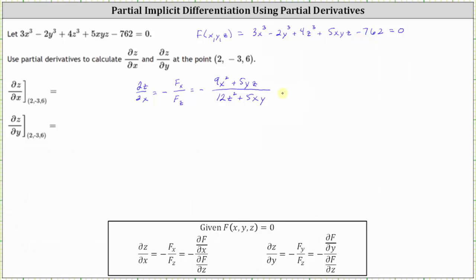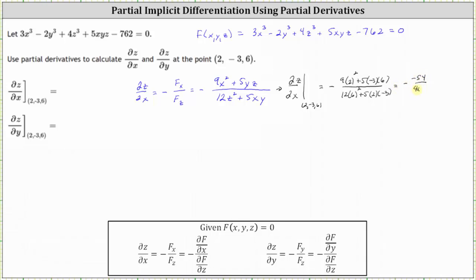Now we can evaluate the partial derivative at the point two comma negative three comma six. We have the opposite of the fraction where the numerator is nine times two squared plus five times negative three times six, and the denominator is twelve times six squared plus five times two times negative three. This comes out to negative of negative 54 over 402, which simplifies to 9 over 67.